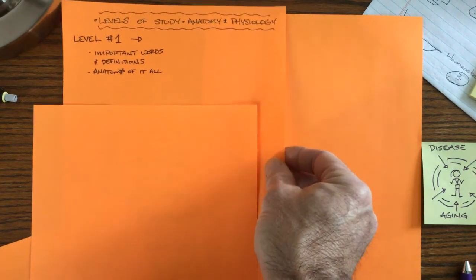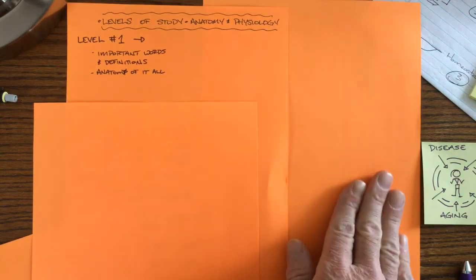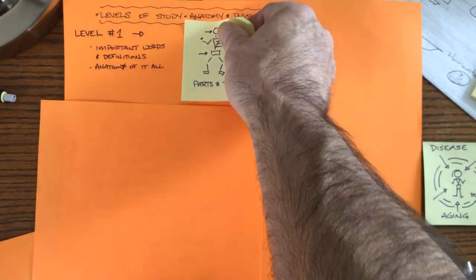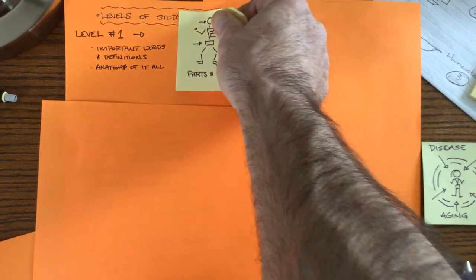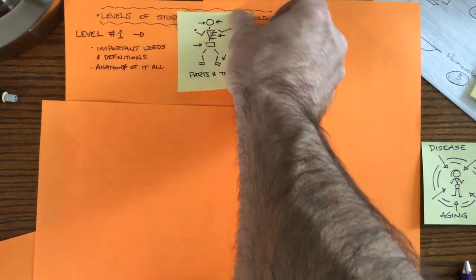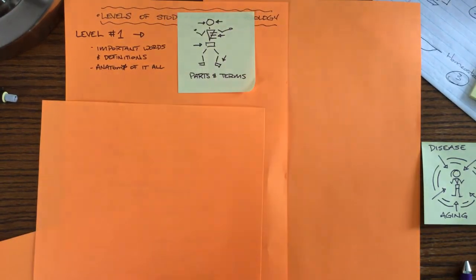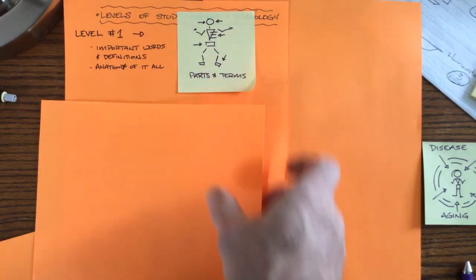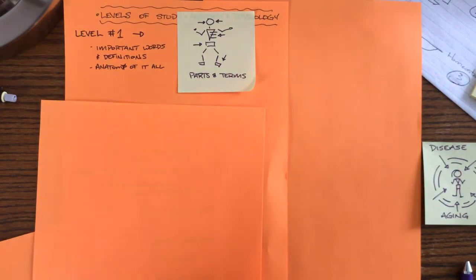Once you have level one, it makes it a lot easier to move on to level two, which I'll explain in a second. This is going to be the symbol for level one. If you're following me on Instagram, I posted this picture yesterday and asked you to just list organs, glands, and hormones of the endocrine system. By the way, glands are the organs of the endocrine system.